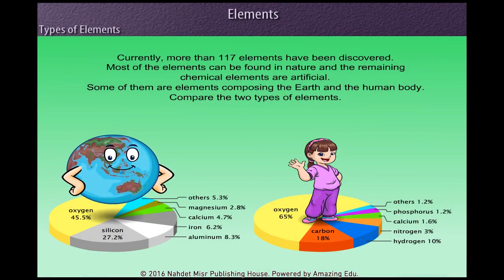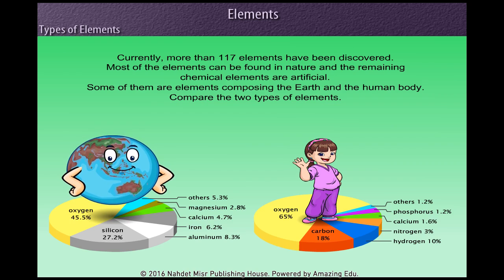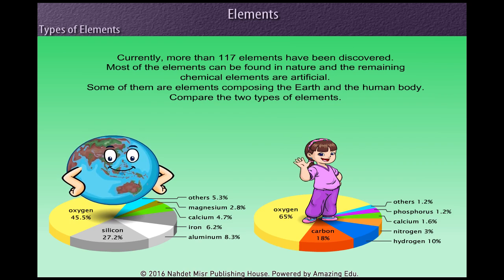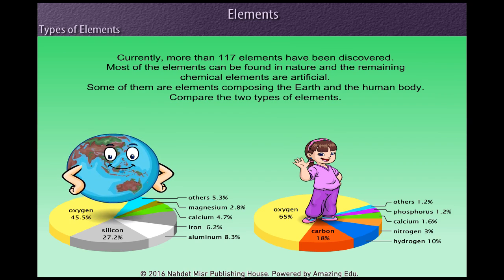Currently, more than 117 elements have been discovered. Most of the elements can be found in nature and the remaining chemical elements are artificial. Some of them are elements composing the earth and the human body.